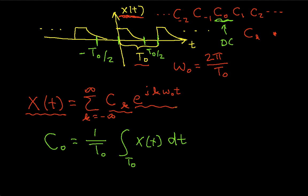The other c sub k's are given by the following formula. It looks a lot like this first formula up until the point where we're at here, and we add a complex exponential into the integral.